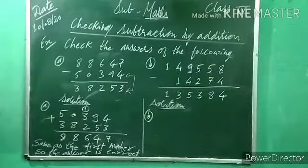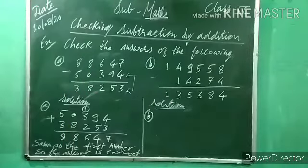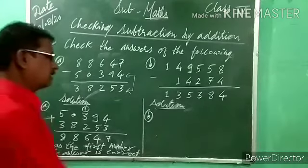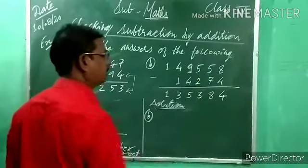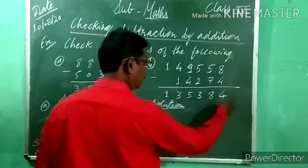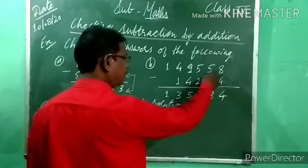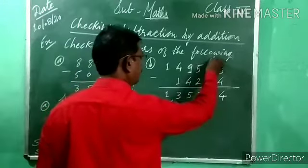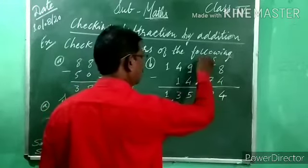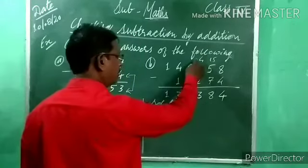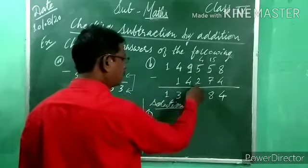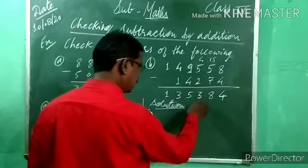Now check: 1,49,558 minus 14,274, answer given is 1,35,384. Check: 8 minus 4 = 4. 5 minus 7 — borrow needed — 15 minus 7 = 8. This answer is equal, so proceed.